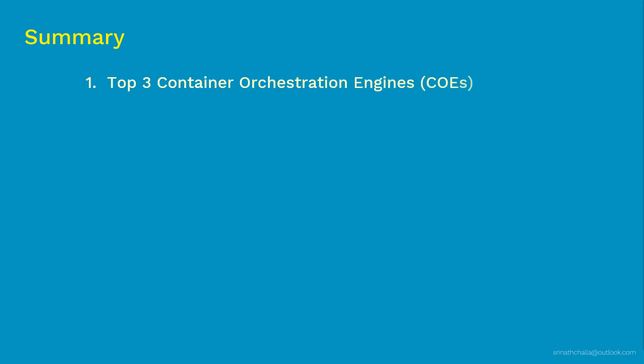In summary, the top three container orchestration engines discussed in this video are Apache Mesos Marathon, Docker Swarm, and Kubernetes. Apache Mesos contains about 20-plus frameworks, and Marathon is the one that supports container orchestration. Apache Mesos has a complex setup compared to other container orchestration engines and is best suited for mid-to-large scale companies that want to use other frameworks alongside Marathon.